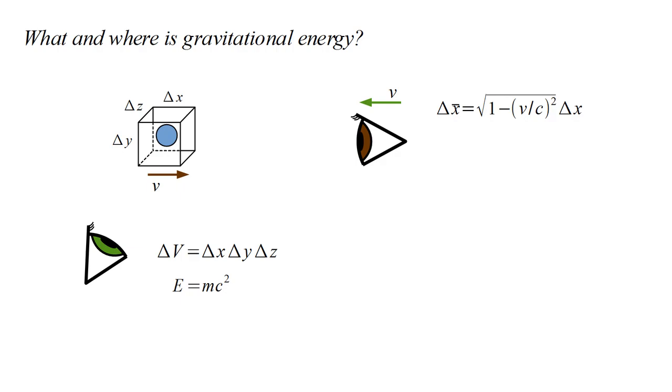See video 5b in this series for a discussion of length contraction. Therefore, the brown-eyed observer will measure a smaller volume. He will also measure a larger energy, because in his reference frame, the particle also has kinetic energy. Now if he calculates the energy density inside the box, he will get a larger value than the green-eyed observer.